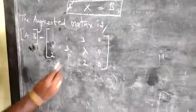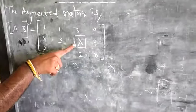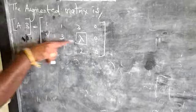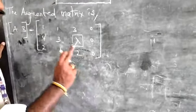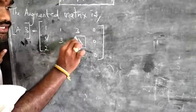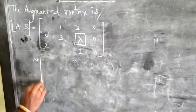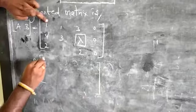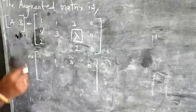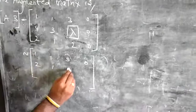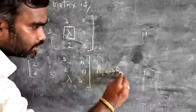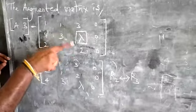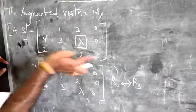In the augmented matrix, lambda is present in row 2. In the previous examples with K, lambda, and mu, all unknown values were present in the last element position. Now lambda is in R2, so we want to transform R2 and R3 — swap rows R2 and R3 — so that the unknown value lambda is present in row R3. This allows us to determine the unique and non-unique solutions.